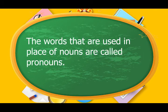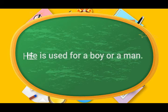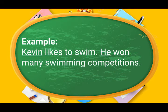Pronoun. The words that are used in place of nouns are called pronouns. Let's see what these words are: he, she, it, you, we, they, I. He is used for a boy or a man. Kevin likes to swim. He won many swimming competitions. Here, Kevin is replaced with pronoun 'he'.